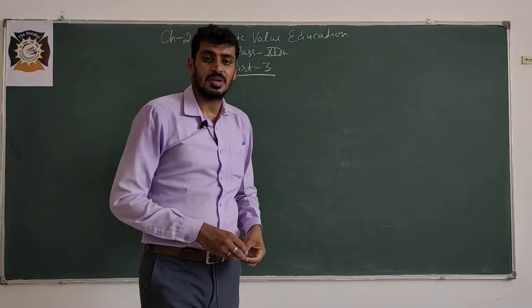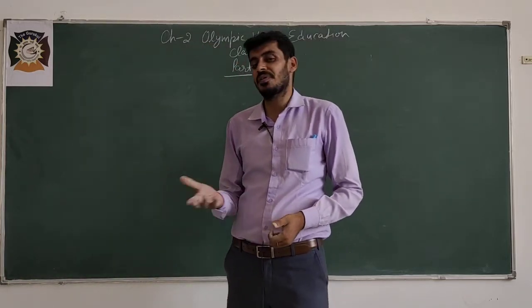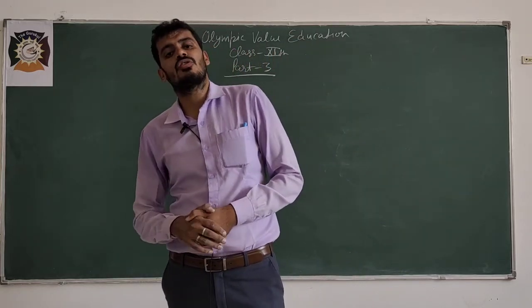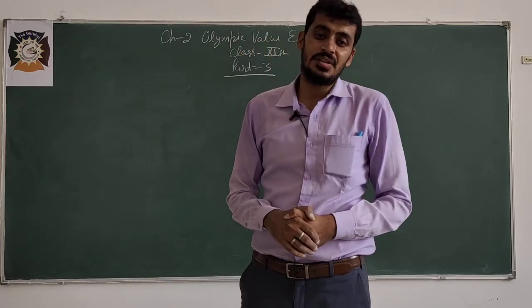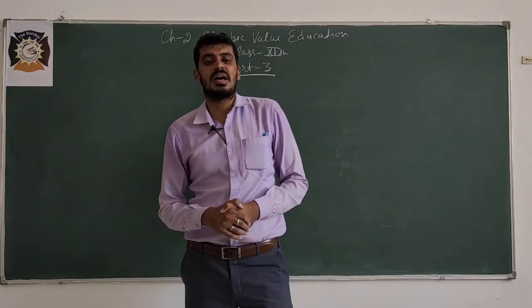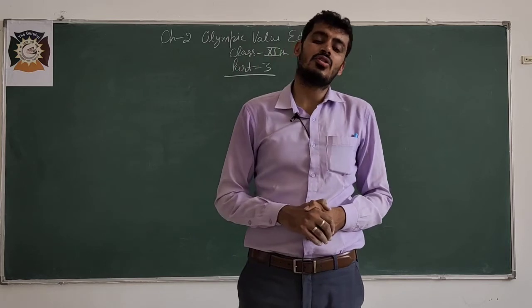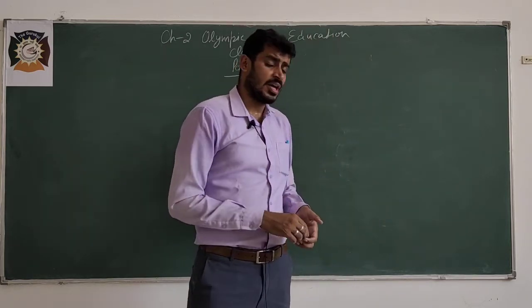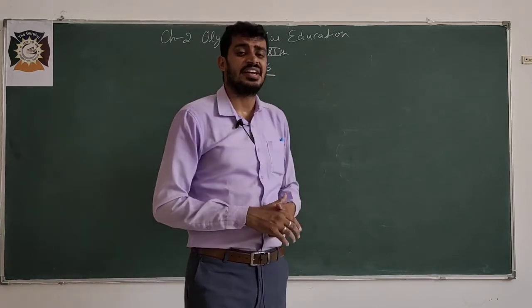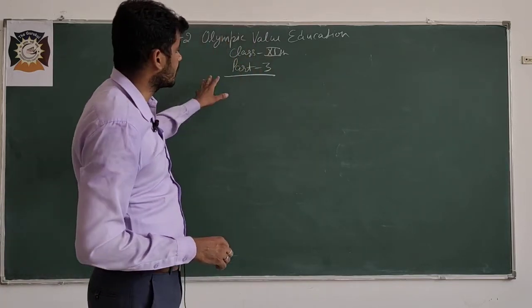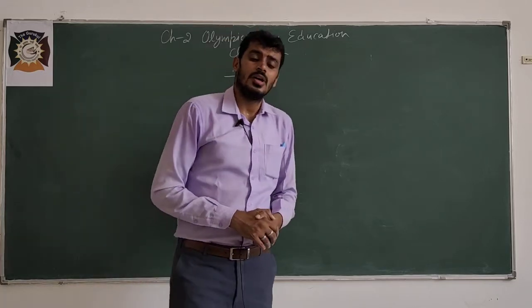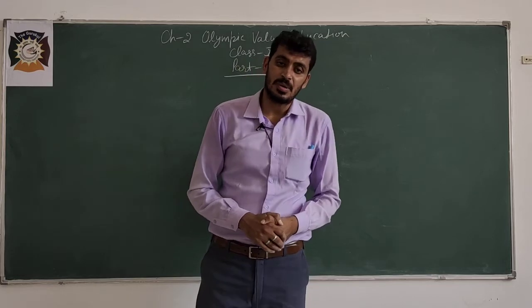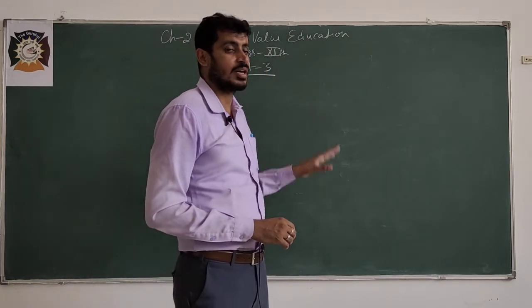In first part we completed how that ancient Olympic started and after that what was the rule and regulation of ancient Olympic, and then modern Olympic how it started with the efforts of Pierre Baron de Coubertin in 1896. After that we completed the ceremony of modern Olympic games, opening and closing, Olympic ideals, Olympic motto, Olympic flag, Olympic flame, all these things we covered.